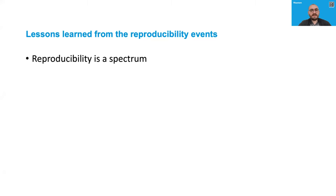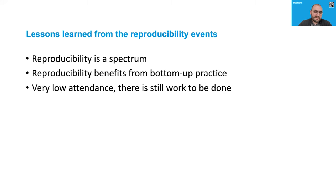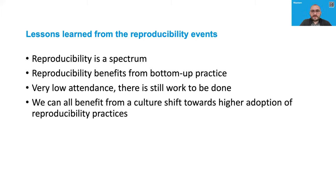Overall, reproducibility is a spectrum. We saw this in both the repro hack and the challenge, where we used a reproducibility checklist and learned that hardly any project can meet all requirements. The question is not whether a project is reproducible or not, but to what extent it is reproducible and what one can do to improve on that. We learned that reproducibility benefits greatly from bottom-up practice while top-down support is slowly gaining momentum. Attendance at the repro hack and challenge was rather low, so there is still work to be done. Reproducibility is a shared effort, and we can all benefit from a culture shift towards higher adoption.